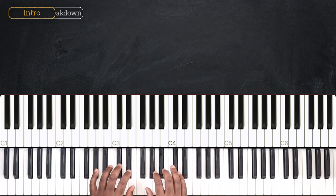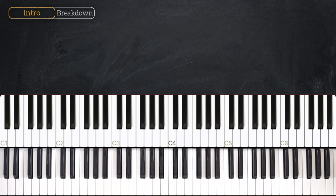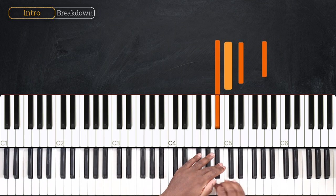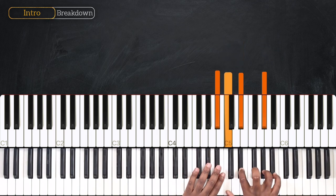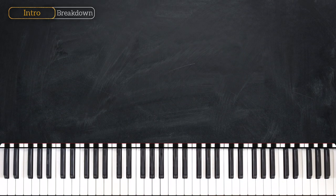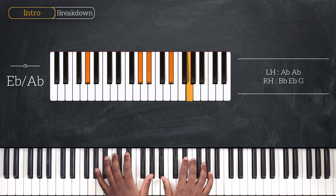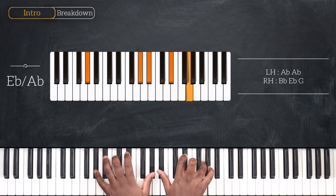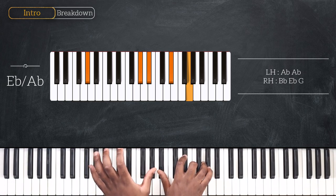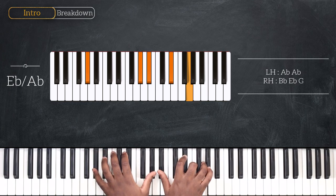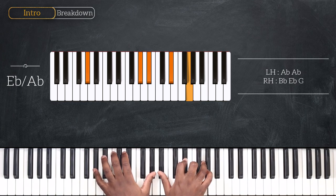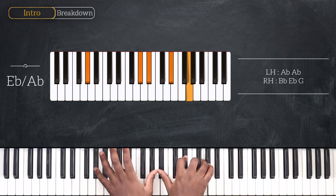For this first part, I'm going to break down the intro of the song. We're playing in the key of Ab. For the chords, we're starting with Eb over Ab. That's octave Ab on my left, with Bb, Eb and G on the right hand — so Eb over Ab.